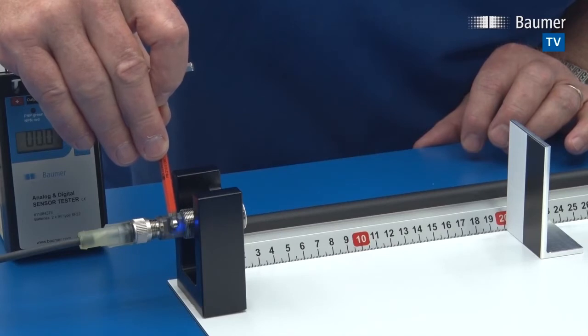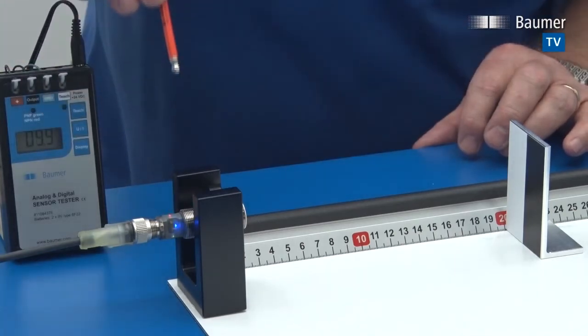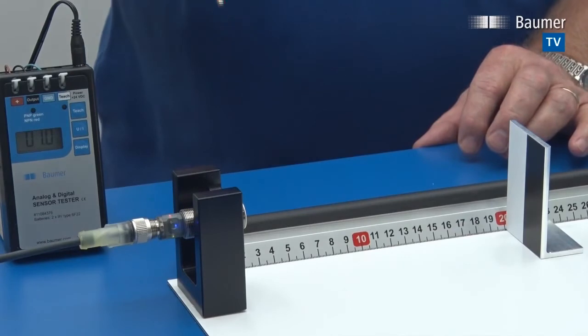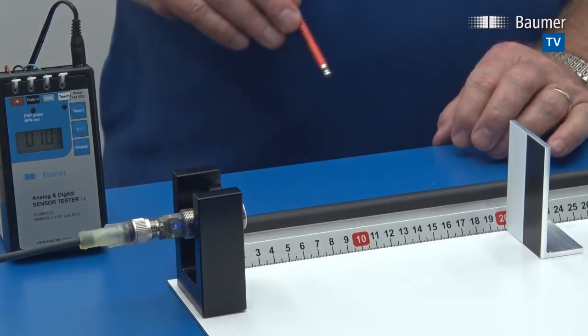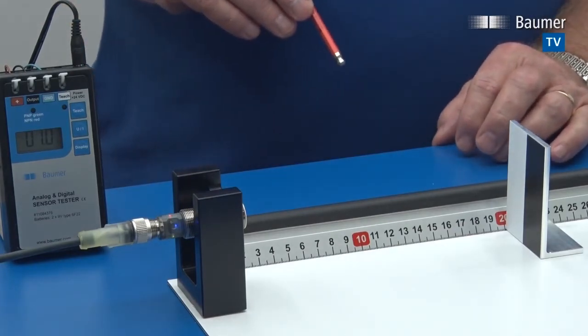We go past level one, past level two. And once in level three, you just have to remove the tool. And the sensor has been successfully set back into factory settings.